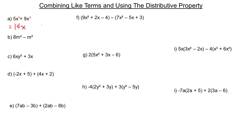Because we're adding, what you end up with is the same kind of term that you started with — it's not x squared. That's when you multiply an x by an x that you get x squared. We're just adding, so we start with x's and we're going to end with x's.